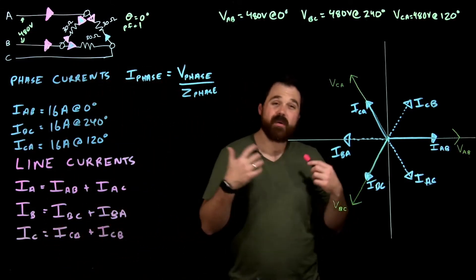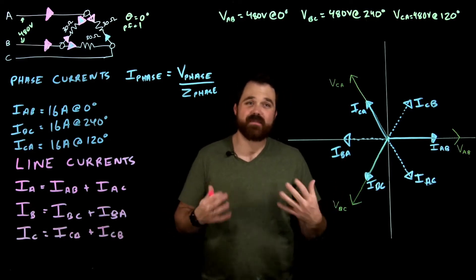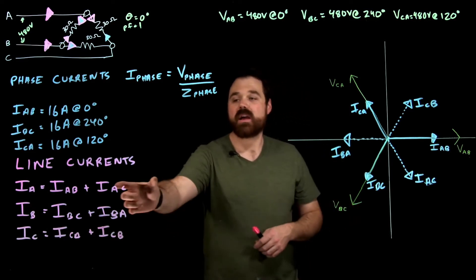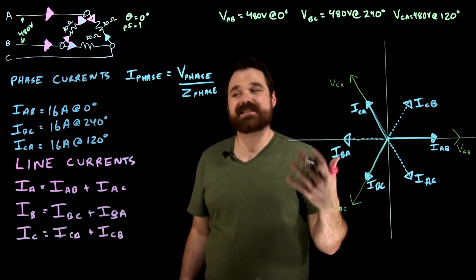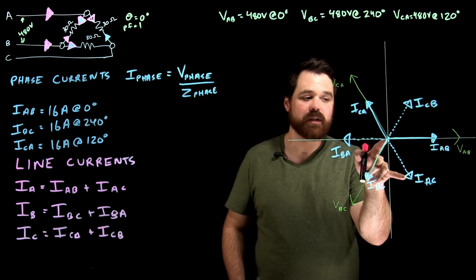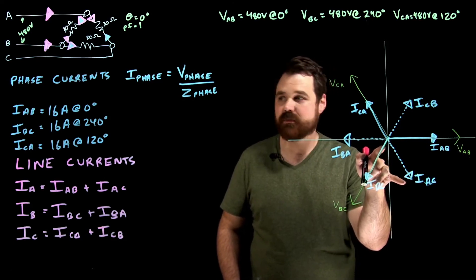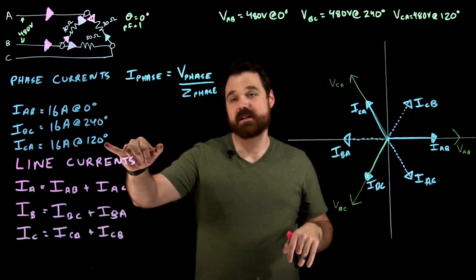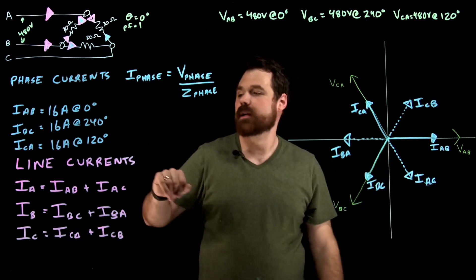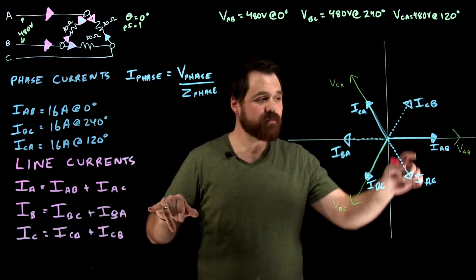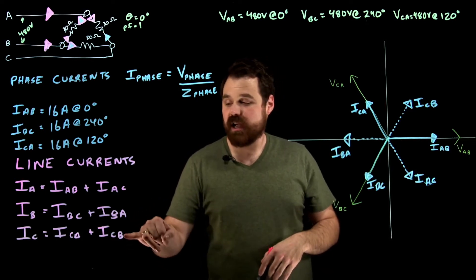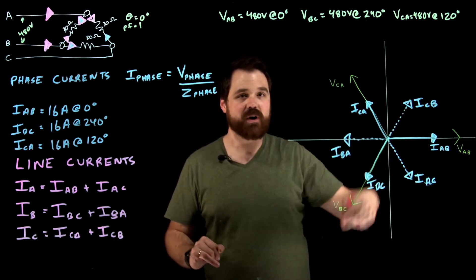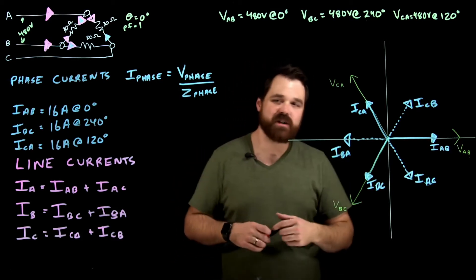We're going to take those, we end up having to solve for those inverse phasors. So A to C is the inverse 180 degrees apart, that would be 16 amps at 300 degrees because this is at 120, so plus 180. IB to A is 180 from A to B, so it puts it at 180. And IC to B is 180 from 240, which puts it up there at 60 degrees.